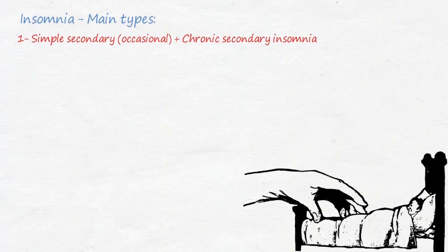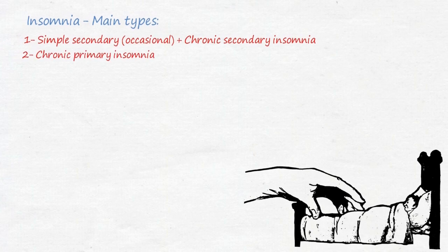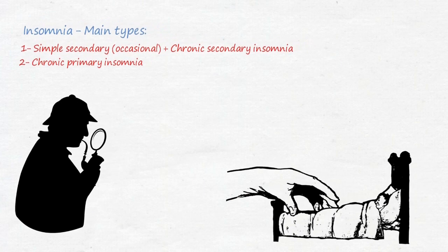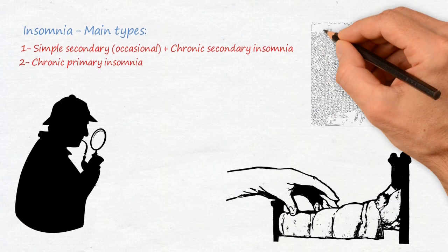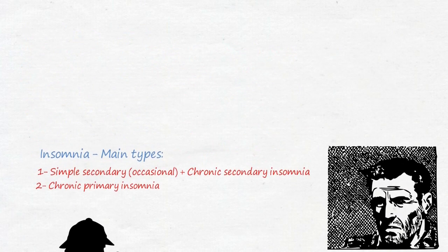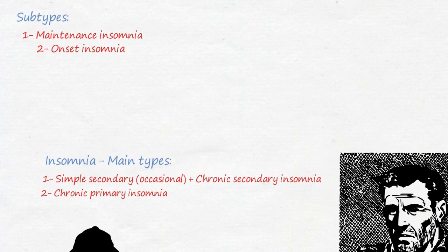We've got two main types: first simple secondary and chronic secondary insomnia, the other one is chronic primary. Secondary insomnia refers to insomnia with an apparent cause which can be traced and treated. The term primary means a causal advanced type of chronic insomnia near impossible to cure. The subtypes are numerous, the most common are onset and maintenance.